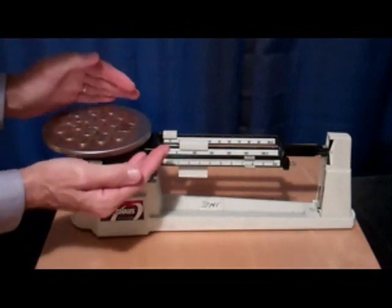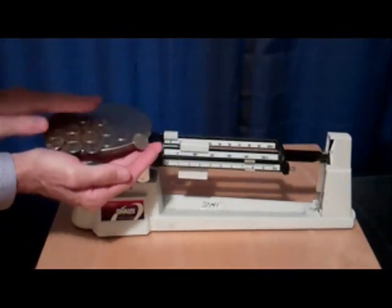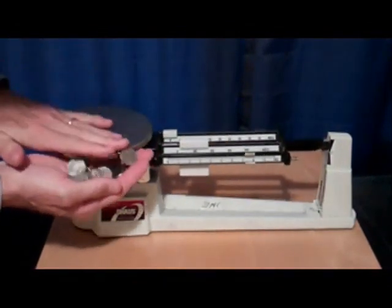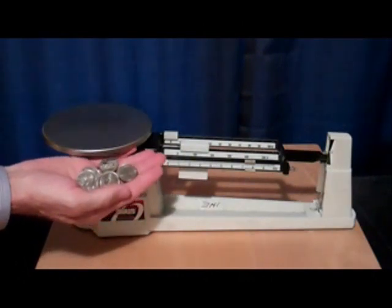The first step in preparing the triple beam balance for use is to clear off the pan. It pays to clear off the pan first.